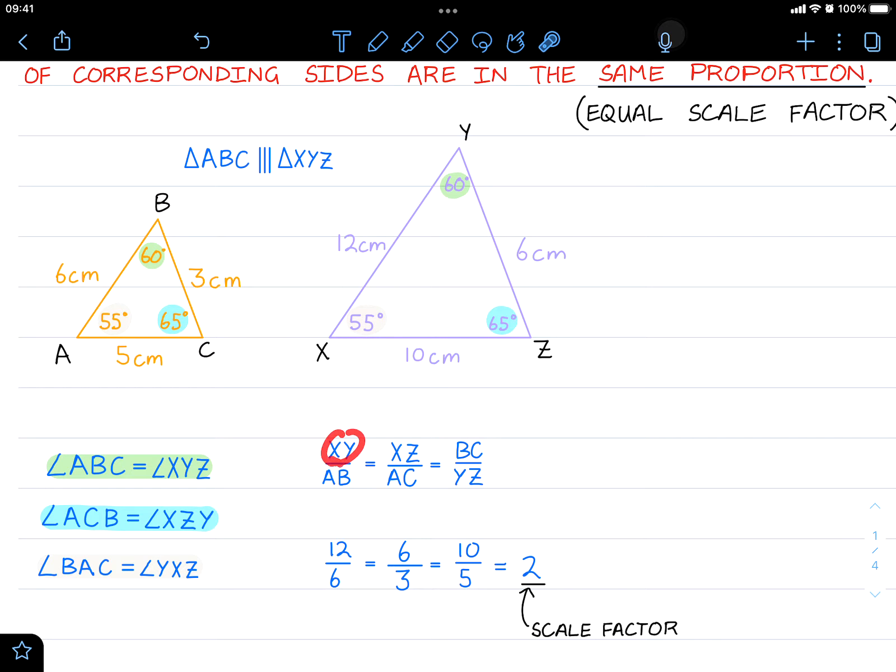If they are equal and if you were to do all the calculations shown here, so for example XY over AB, 12 over 6 is 2. And if you were to do that for all of them, 6 over 3 is 2, and 10 divide 5 is also 2. So all three sides have the same scale factor.